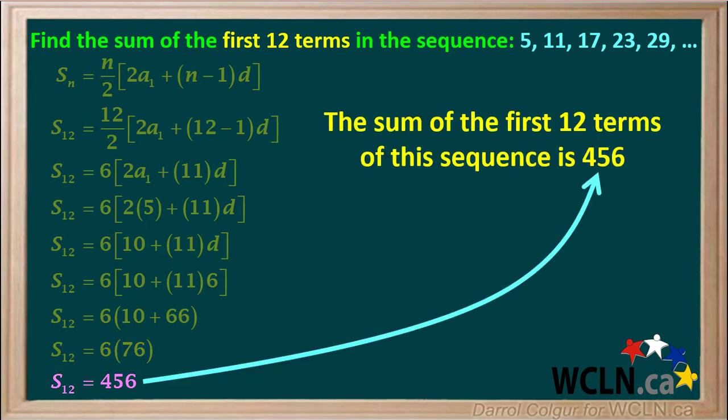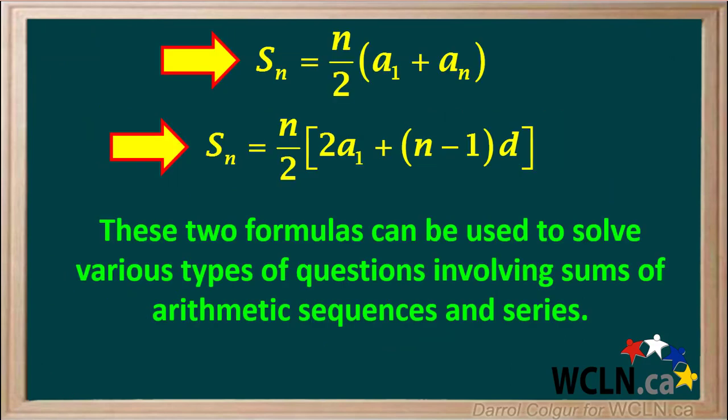Now we have our final answer. The sum of the first 12 terms of this sequence is 456. These two equations are very handy. They can be used to solve various types of questions involving arithmetic sequences and series.